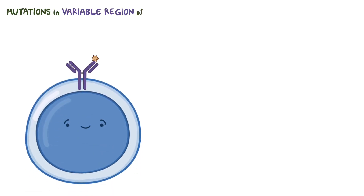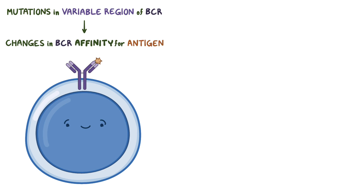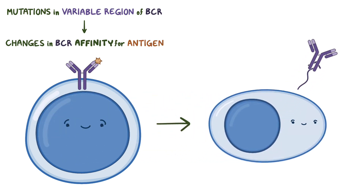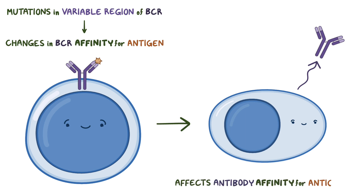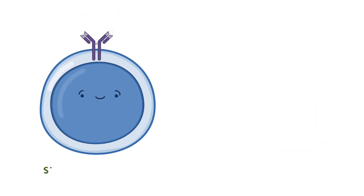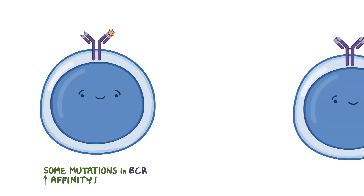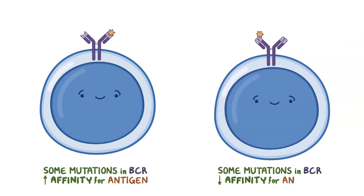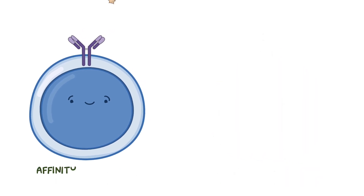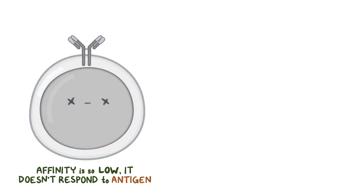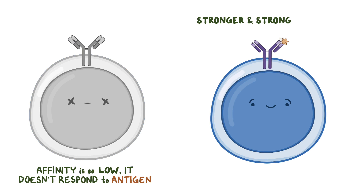Even though random mutations in a gene are usually a problem, mutations in the variable region of the BCR are actually a really good thing. The changes affect how strongly the BCR binds to the antigen — its affinity for the antigen. Since the B cells will eventually become plasma cells that secrete antibodies, this process affects antibody affinity for antigen. While some daughter cells have mutations that increase affinity, others have mutations that decrease it. If a B cell's affinity is so low that it doesn't respond to the antigen anymore, it will stop getting activated and die out. Other cells will get a stronger and stronger affinity over the generations — this is what leads to affinity maturation.